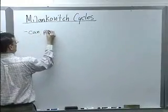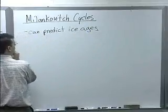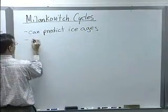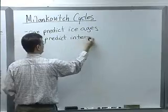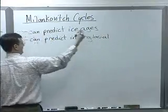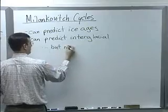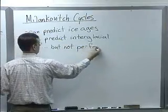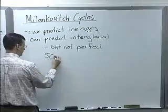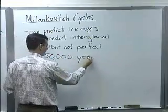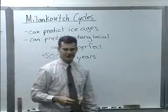So we can predict ice ages. We can also predict some interglacial periods. So periods during and in between ice ages when there's sort of small-scale changes. But it's not perfect. Still, we can say with some certainty that we do not expect the next ice age for the next 50,000 years. So put your winter coat in storage.